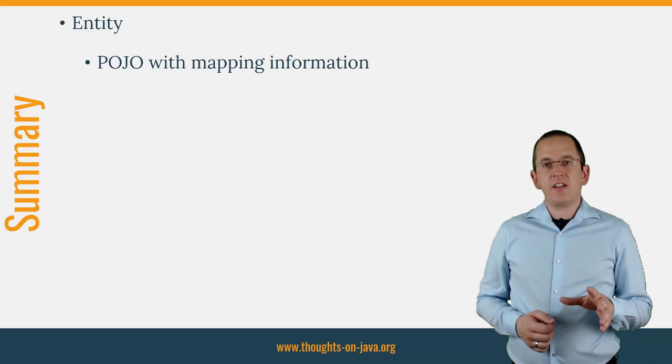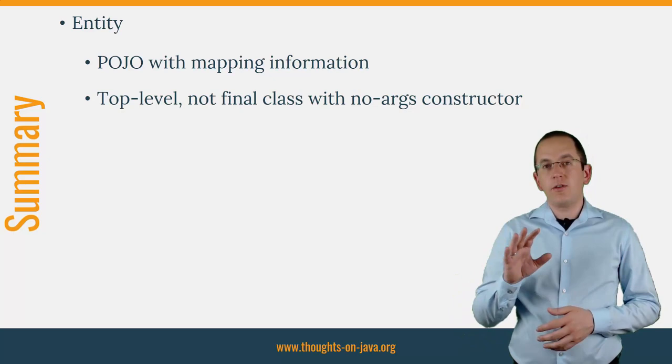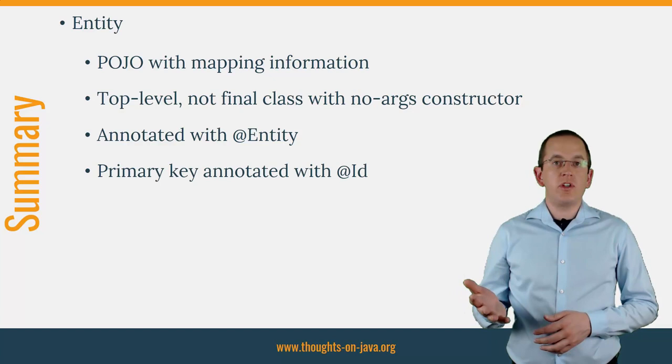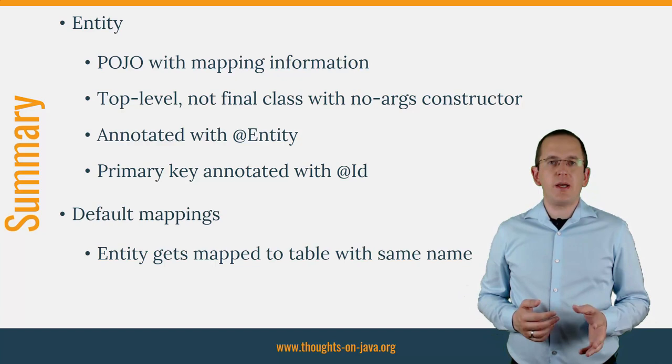To summarize: an entity is a plain old Java object with mapping information. It has to be a top-level class that is not final and has a constructor without any arguments. You need to annotate the class with the entity annotation, and each entity must have one or more attributes that identify the entity object, annotated with ID. By default, your JPA implementation maps the entity class to a database table with the same name and each of its attributes to a column with the same name.